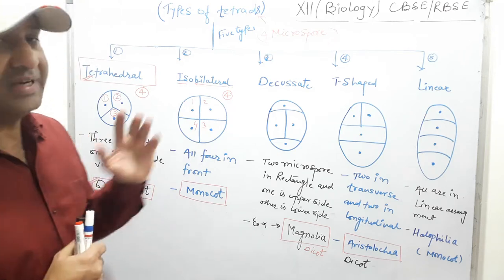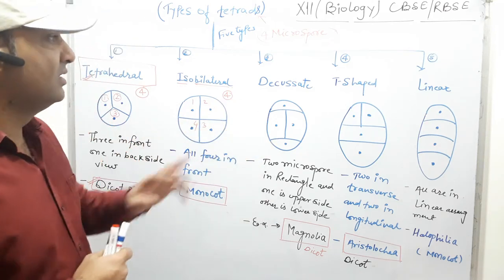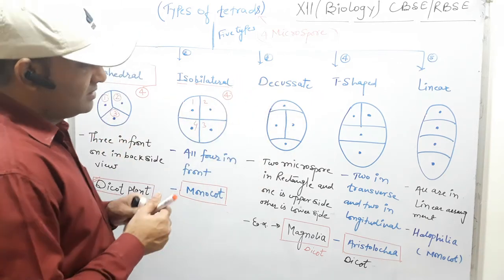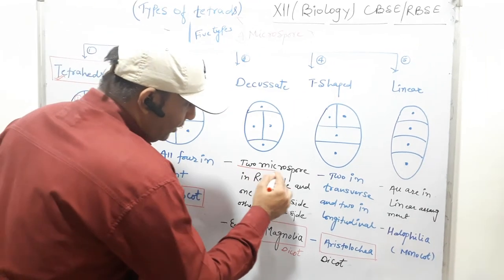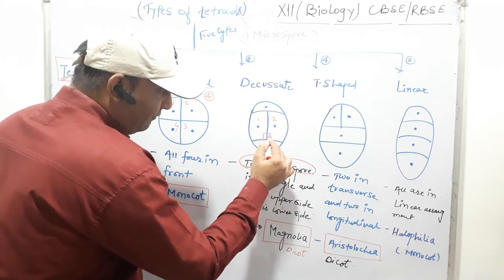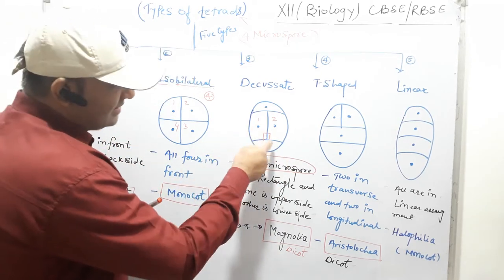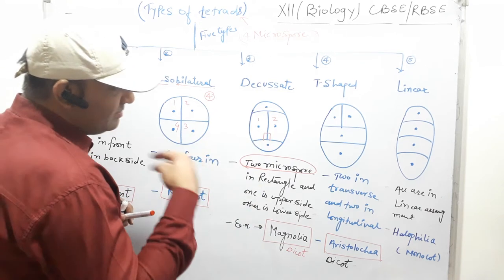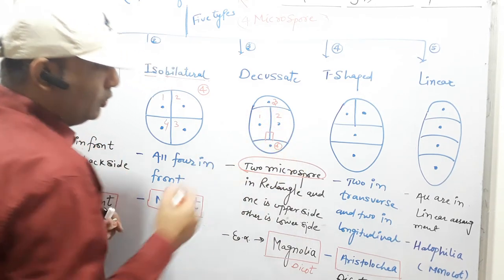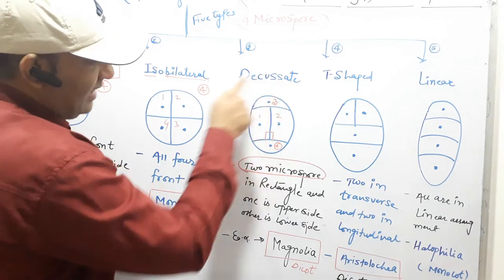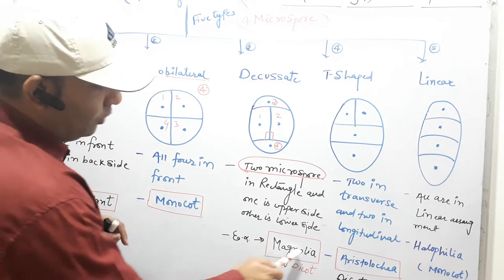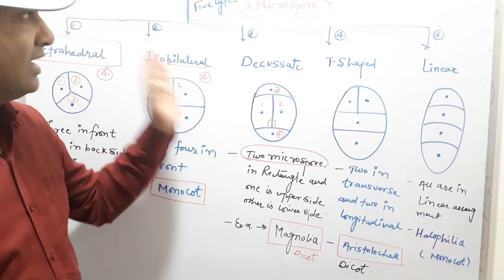Some other types of tetrad are present in different plants. Third is decussate. In decussate type, two microspores are present on either side in a rectangle shape, and the remaining two — one on the upper side and one on the lower side. This is called the decussate type of tetrad, and it is generally present in the dicot plant Magnolia.